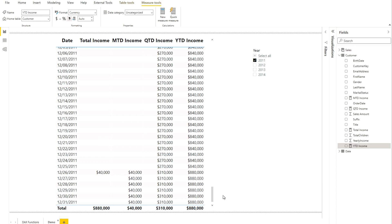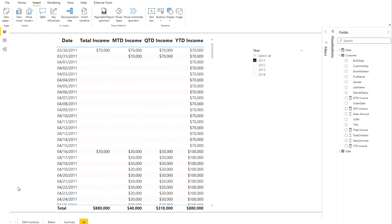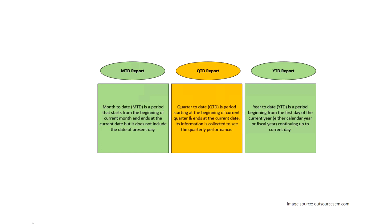To summarize: MTD is a period starting from the beginning of the current month and ending at the current date, not including the present day. QTD is a period starting at the beginning of the current quarter and ending at the current date, useful for viewing quarterly performance. YTD is a period beginning from the first day of the current year — either calendar or fiscal — continuing up to the current day. These three concepts are very important for anyone working on analytical reports, whether in Power BI or any other data visualization tool.